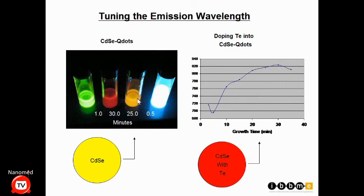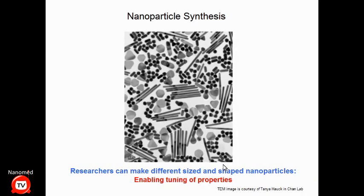You can change the properties of the material by simply changing the preparation time and by doping it — adding different atoms to the nanoparticle composition. In our lab we make rod-shaped, sphere-shaped, and triangle-shaped structures. Nanoparticles can range from 1 to 100 nanometers and can be made as rods, spheres, triangles, tetrapods, dumbbell shapes, and rice-shaped structures. Each shape has unique properties associated with the material.